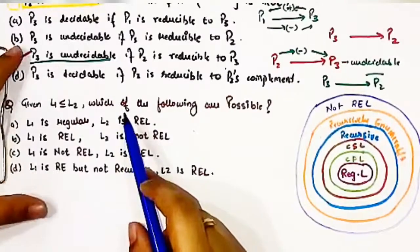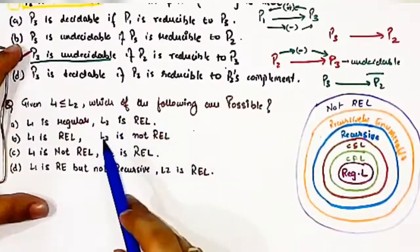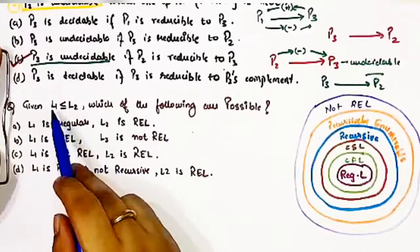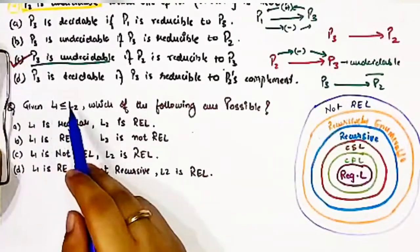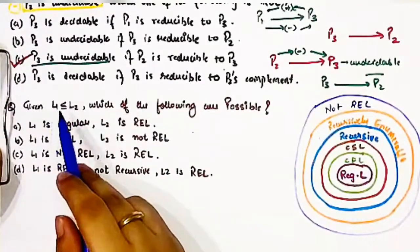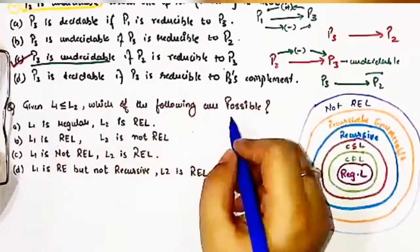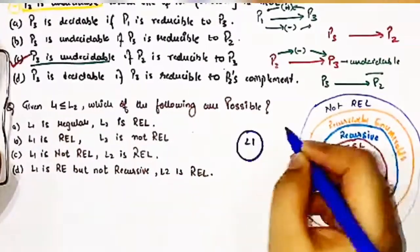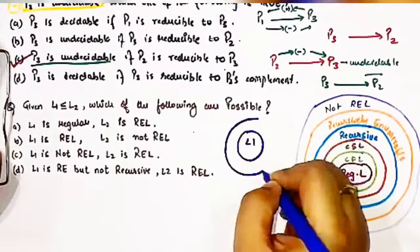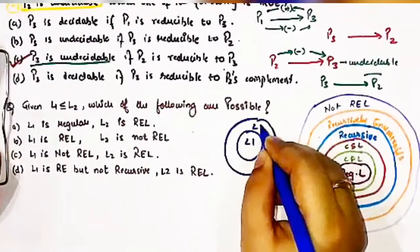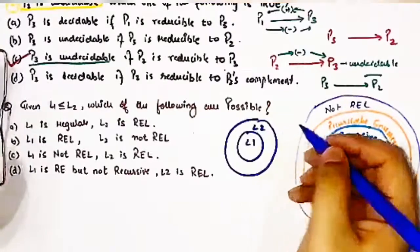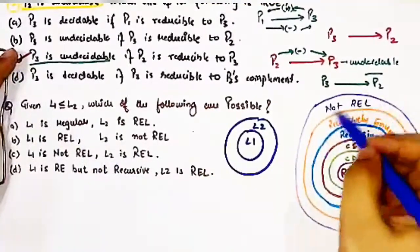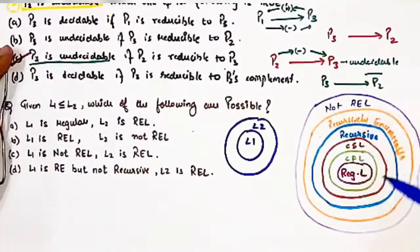Now let's discuss one more very good question based on reducibility, but in the context of languages. It is given that L1 is one language and L2 is another language, and L1 is reducible to L2. This means L1 is a smaller set of languages and L2 is a larger set. I have also drawn the hierarchy of all the languages here.